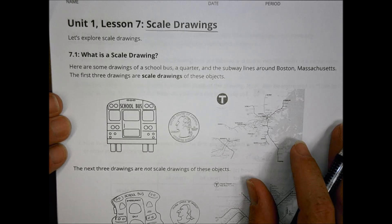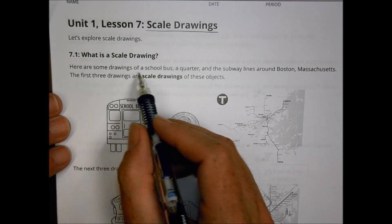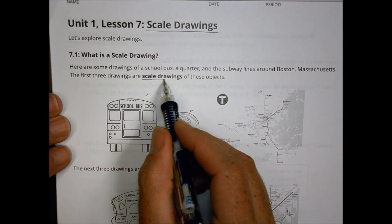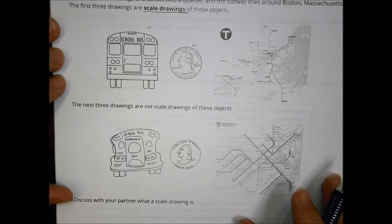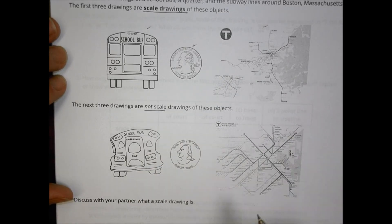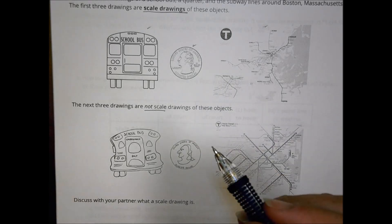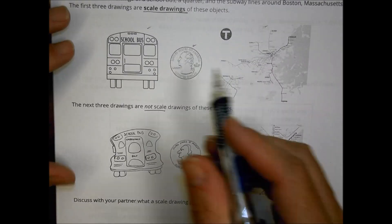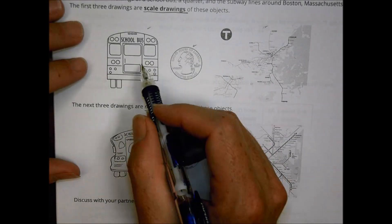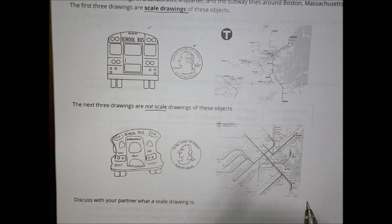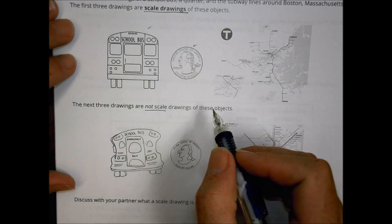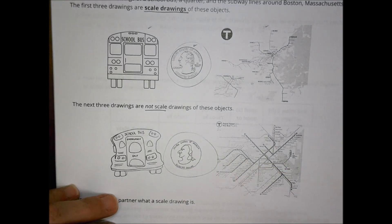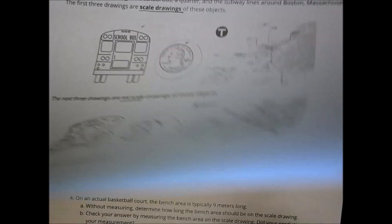We begin today's lesson by asking the question: what is a scale drawing? It shows some pictures of a school bus, a quarter, and some subway lines around Boston, Massachusetts. The first two drawings are scale drawings of these objects, then it gave a set of pictures below that are not scale. One thing you might have discussed is that those objects are not as accurately drawn — they don't represent the real shape accurately. They're skewed, not quite right. There's a difference between what is a scale drawing and what is not: there should be a close connection between the real object and the drawing for it to really be a scale drawing.